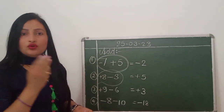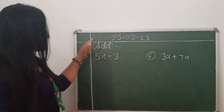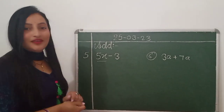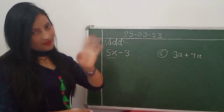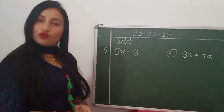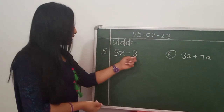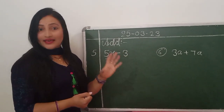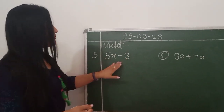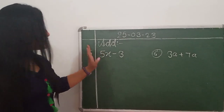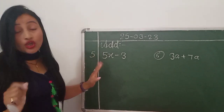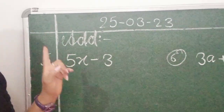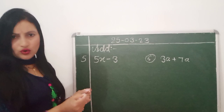I am writing two or three more questions. See here — we have 5x and we have minus 3. Can we add or subtract? No. Why? Because there is no x with 3 — both are not like terms. दोनों एक जैसे like terms नहीं हैं. That's why — इसमें add नहीं होगा और ना subtract होगा. There is x in 5x, but here only 3, not x. So both are not like terms.